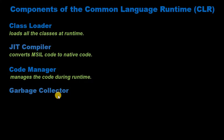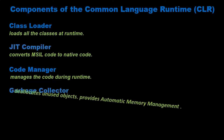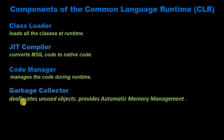Garbage Collector deallocates unused objects and provides automatic memory management. The garbage collector collects all unused objects and deallocates them to reduce memory usage, thus providing the automatic memory management feature. Because of this, there is no need for programmers to write memory management code.